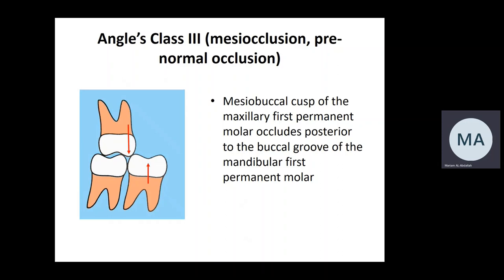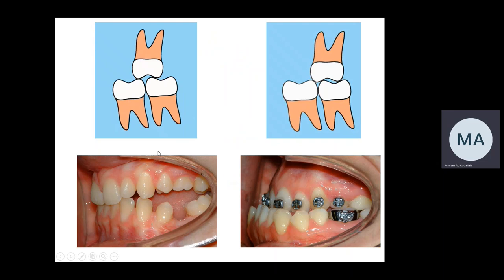For the molar classification: when we say class three molar classification, the meso-buccal cusp of the upper first permanent molar occludes posterior to the meso-buccal groove of the lower first permanent molar. This meso-buccal cusp should occlude on that groove to be called class one; if it's posterior to it, we call this class three. A unit equals the meso-distal width of a premolar, which is almost seven millimeters. If the meso-buccal cusp shifts posteriorly by only halfway, we call this a half unit class three.